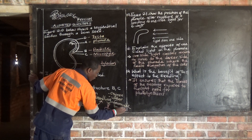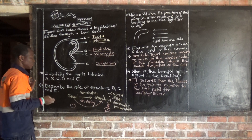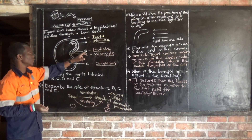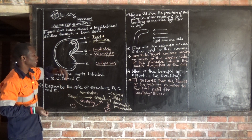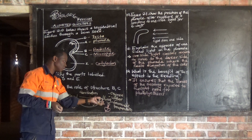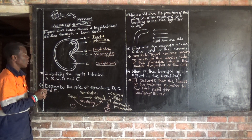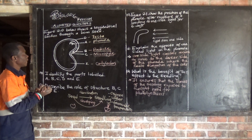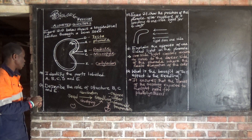These are the conditions necessary for germination to take place. Why am I talking about germination? Because the function of B, which is the radicle, is that the radicle develops into the root system after germination — after a seed has developed into a seedling.